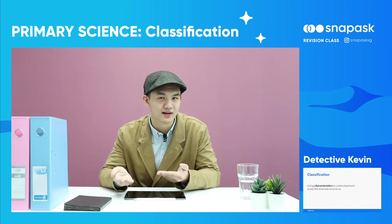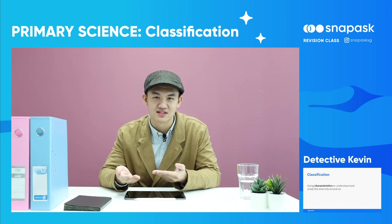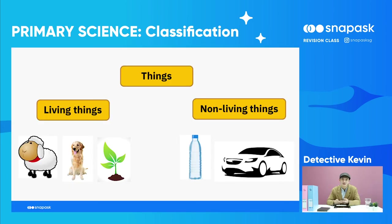How can we do that? By characteristics. Now, things could be living things — like sheep, a dog, or a plant. How do I know that a missing person is indeed a person and not a plant? There are also non-living things, like plastic bottles and cars.